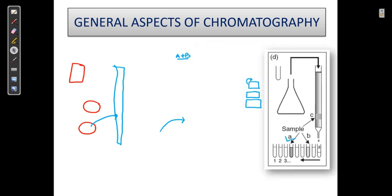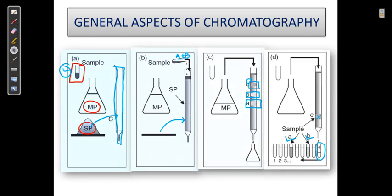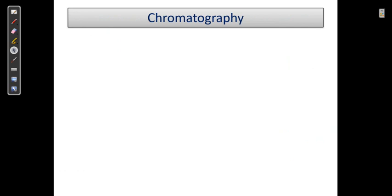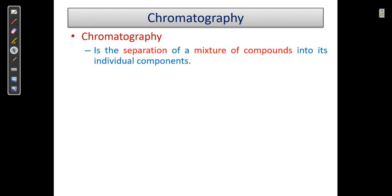The separation is based on interaction between the sample and the stationary phase. When we add the mobile phase, we get component A, then component B, then component C — all separated. So whatever sample we have taken is separated into A, B, and C components. This process is what we call chromatography — the name of the process is separation.